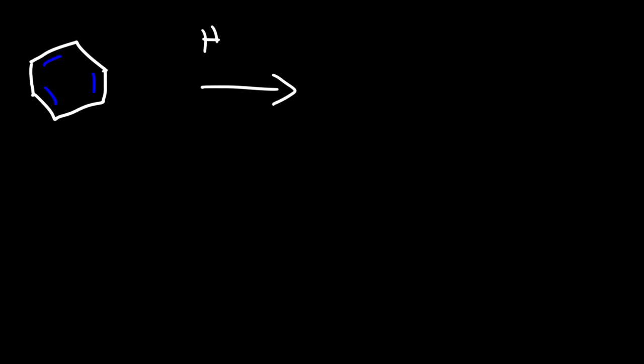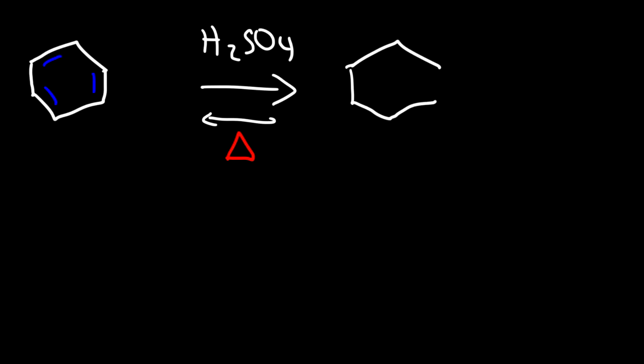In this video we're going to go over the mechanism for the sulfonation of benzene. Here is our benzene molecule and we are going to react it with sulfuric acid. This reaction is reversible but we need heat to make it work. If we mix it with concentrated sulfuric acid we can get a product where we replace a hydrogen with an SO₃H group. This product is called benzene sulfonic acid.